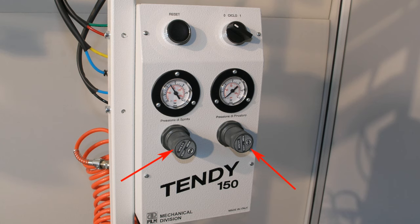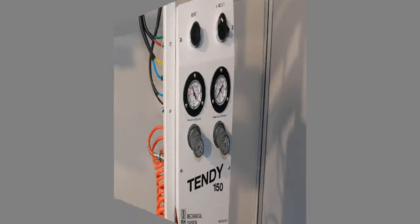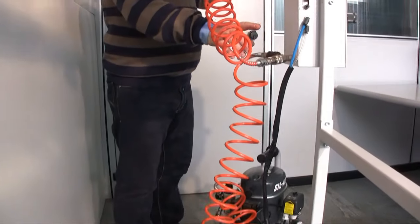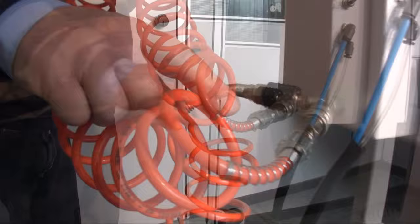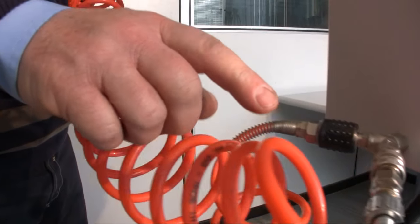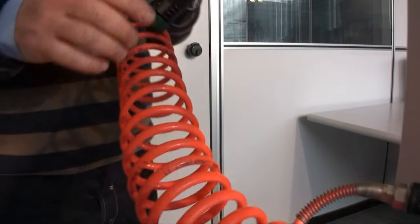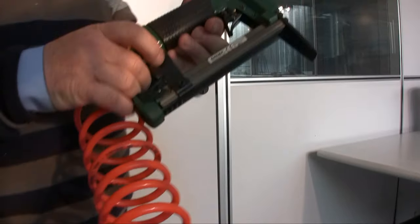Under each manometer is a knob, which is used to increase or decrease the pressure. We have seen that from the compressor, the air arrives to the control box. A joint also makes the air flow to the pneumatic stapler, which is used to fix the canvas to the stretcher frame.